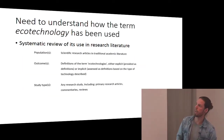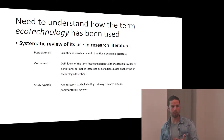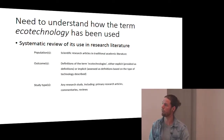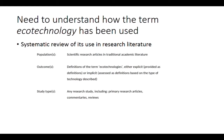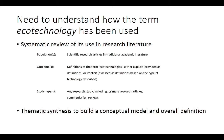We highlighted a need to understand how the term ecotechnology has been used. We decided to do a systematic review of how it's been used in the literature. The population we were interested in is scientific research articles in traditional academic literature — we wanted to see how researchers use the term. We were looking for any type of ecotechnology definition: explicit definitions where people say 'an ecotechnology is...' and also implicit or example-based definitions where people give an example and refer to it as a technology. We decided to use thematic synthesis to build a conceptual model and generate a definition.